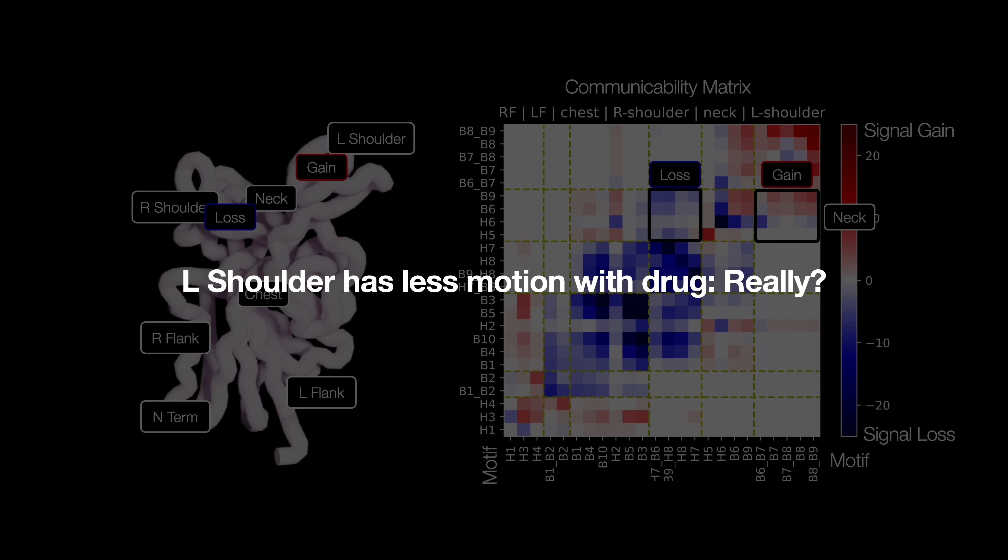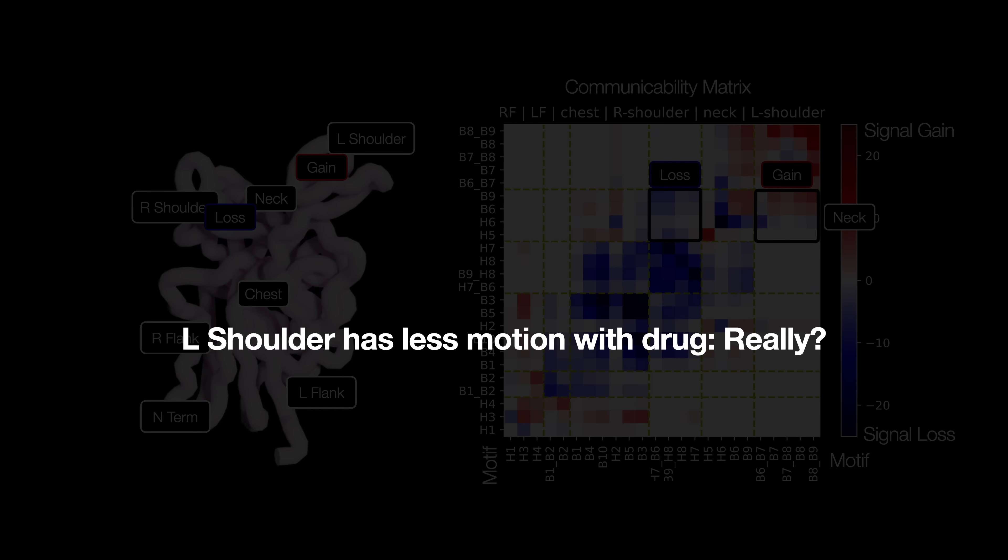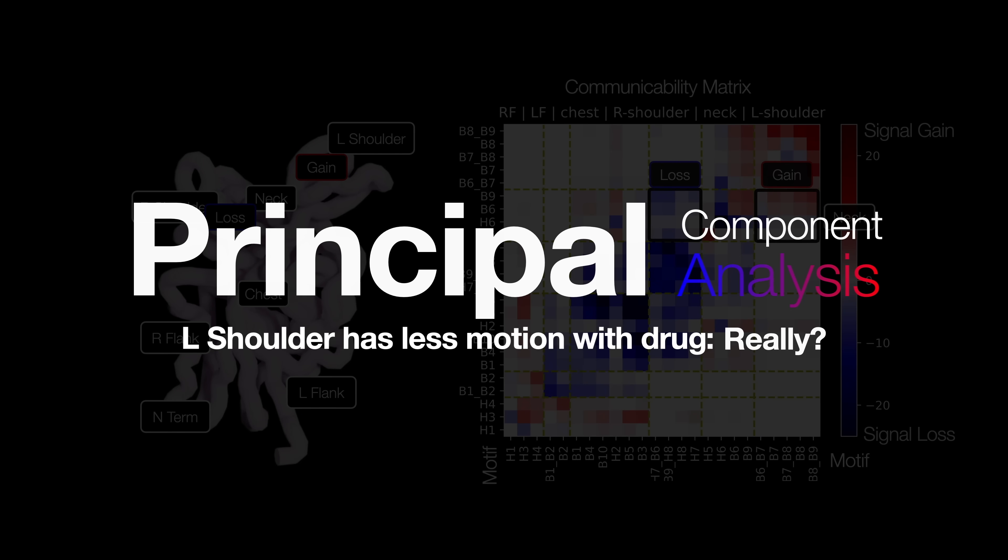We can try to classify the motions of a binding domain with and without the drug using a method called PCA. There are great resources out there that explain this in detail, linked in the description by the way, but here's a rundown of what it actually does for our purposes.